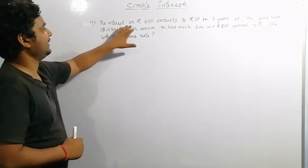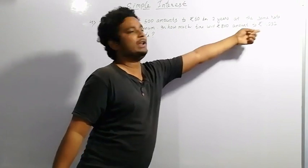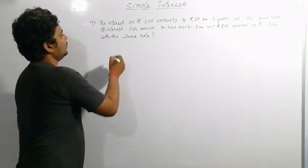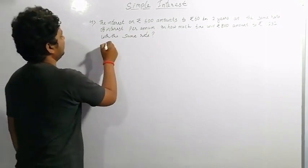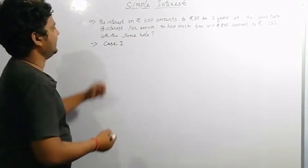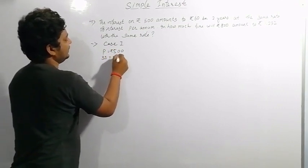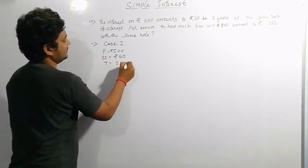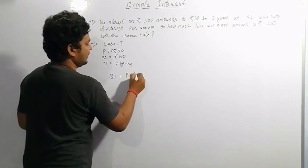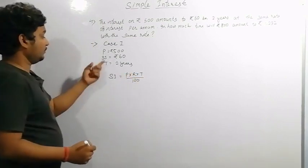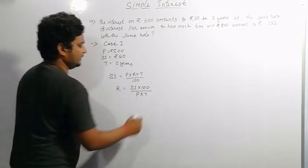Coming to question number 4. The interest on rupees 500 amounts to rupees 60 in 2 years. At the same rate of interest per annum, in how much time will 800 amount to rupees 1,232? We have two cases. Case 1: principal equals 500, SI equals 60, time equals 2 years. We need to find the rate, using: rate equals SI into 100 divided by P into T.